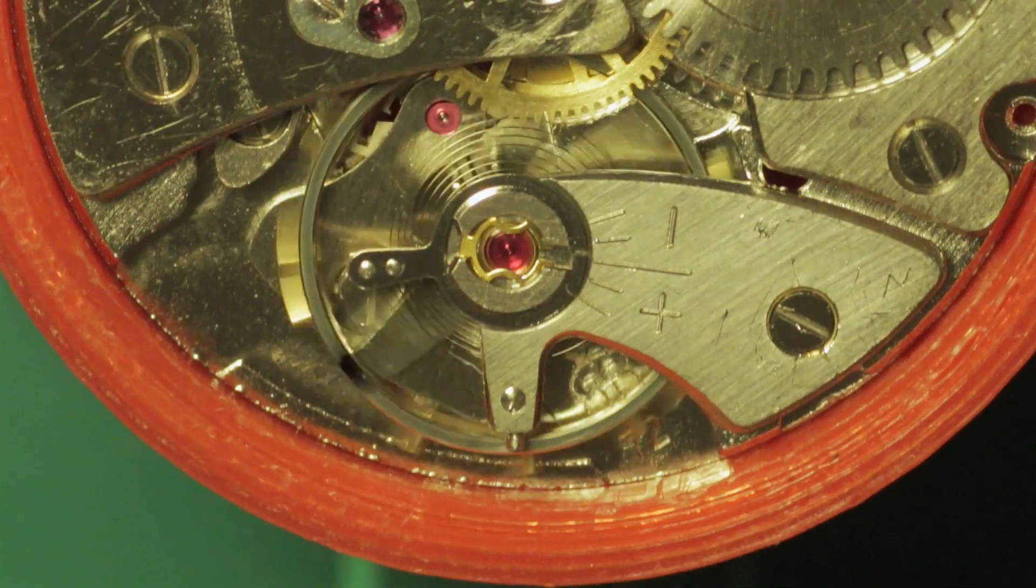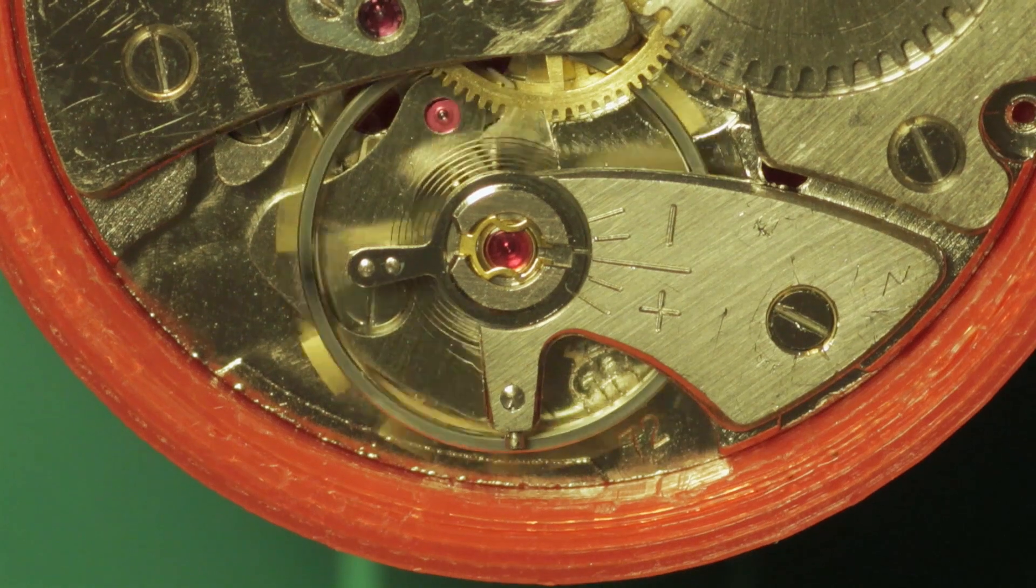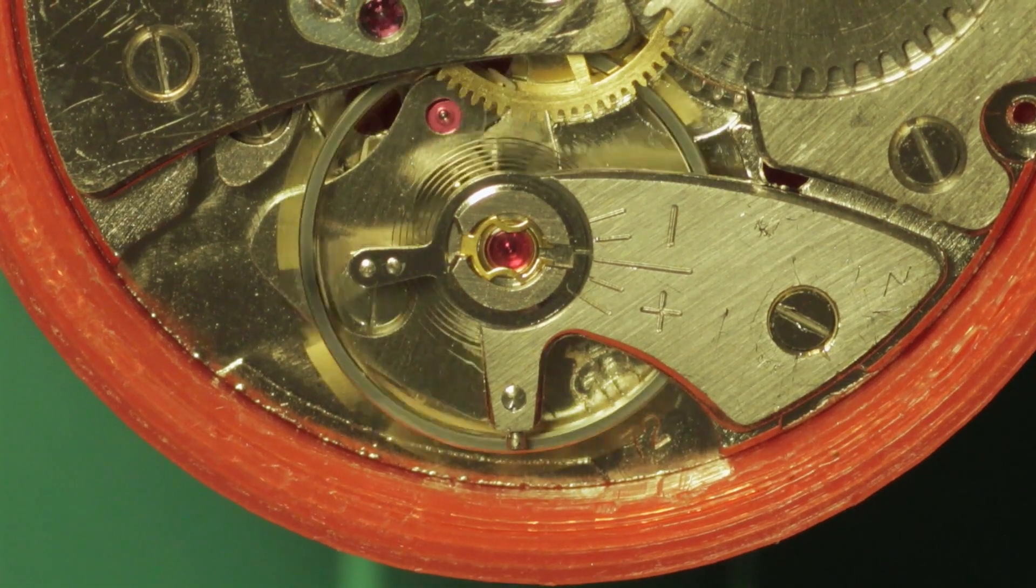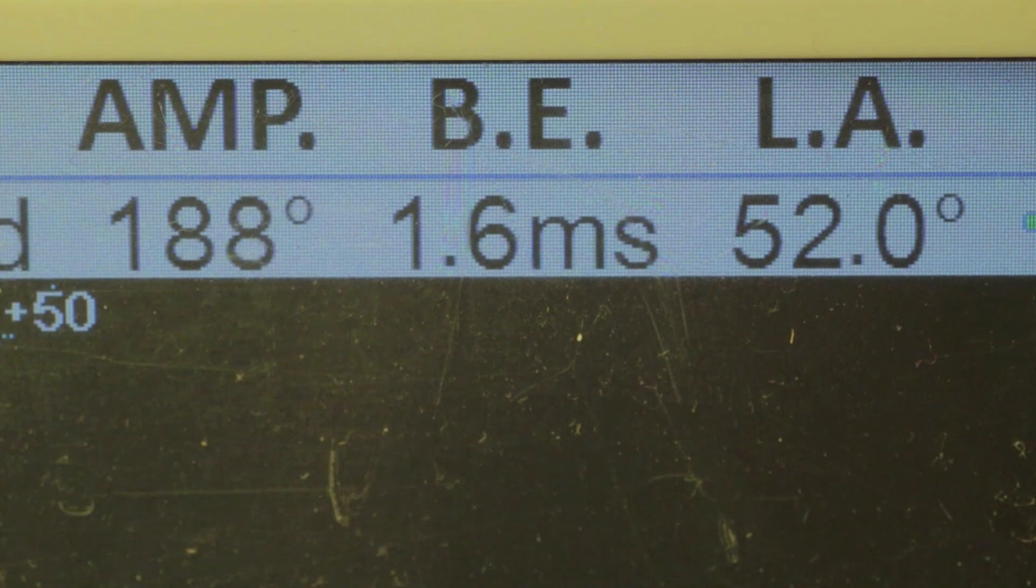What you then do when you've got 180 degrees swing is you switch on your timegrapher. And we're just going to switch to that now and I'll show you the next step.